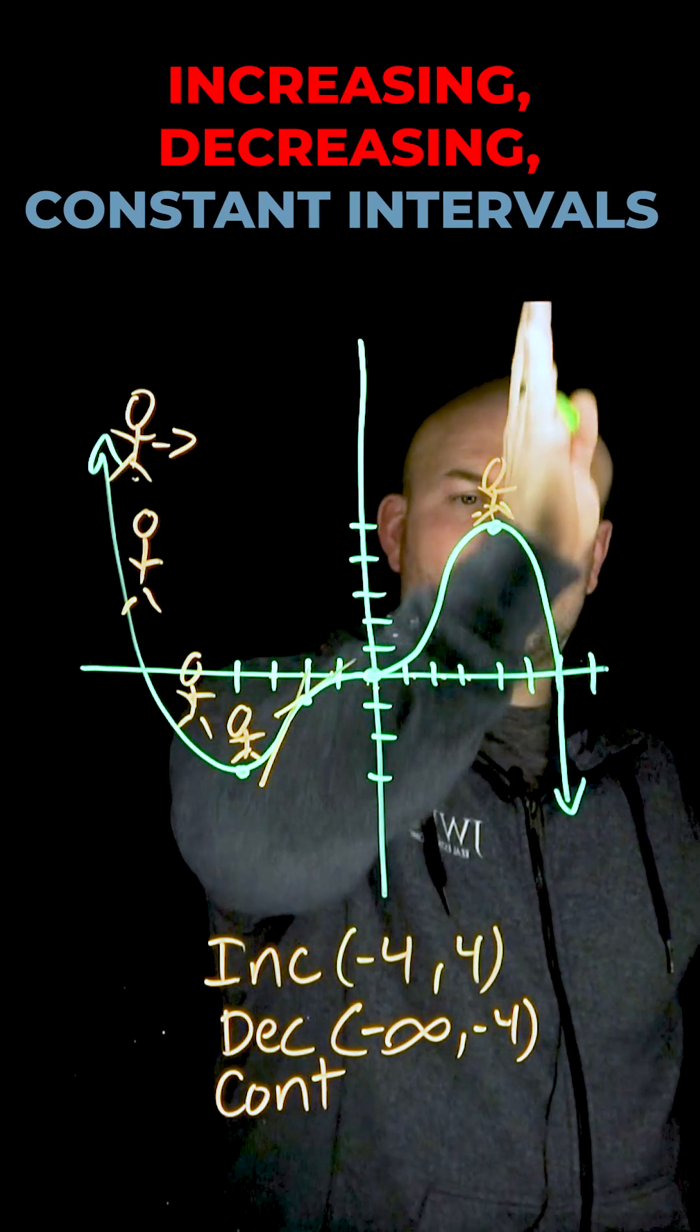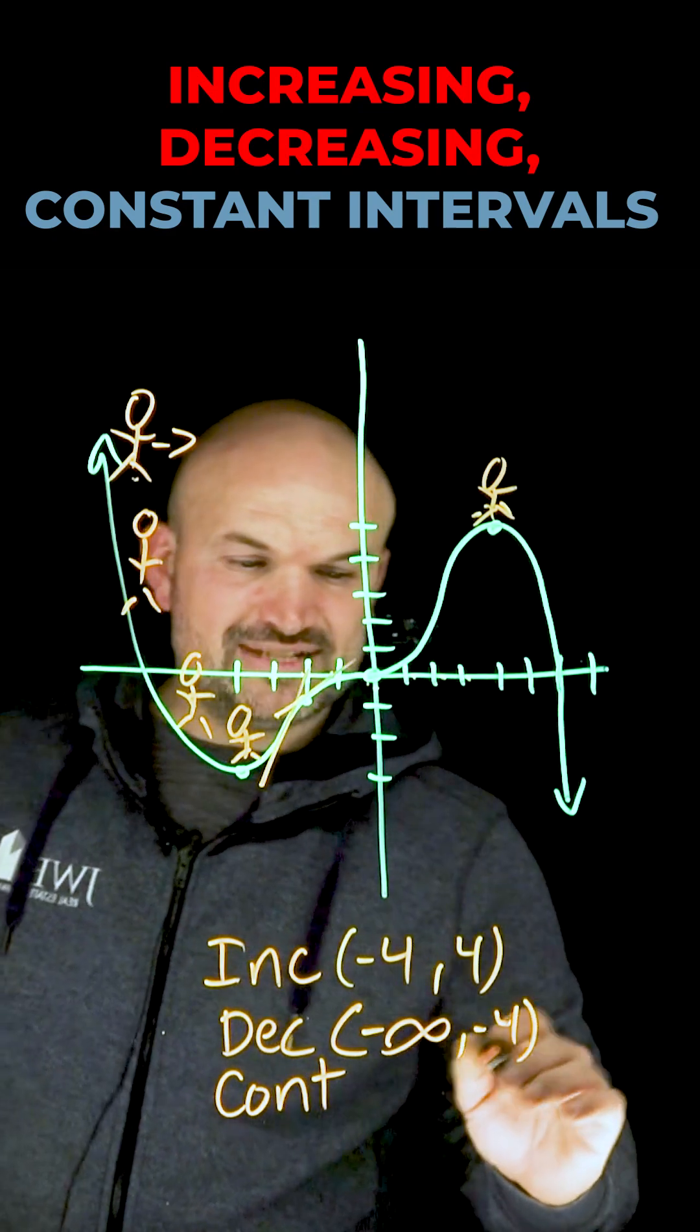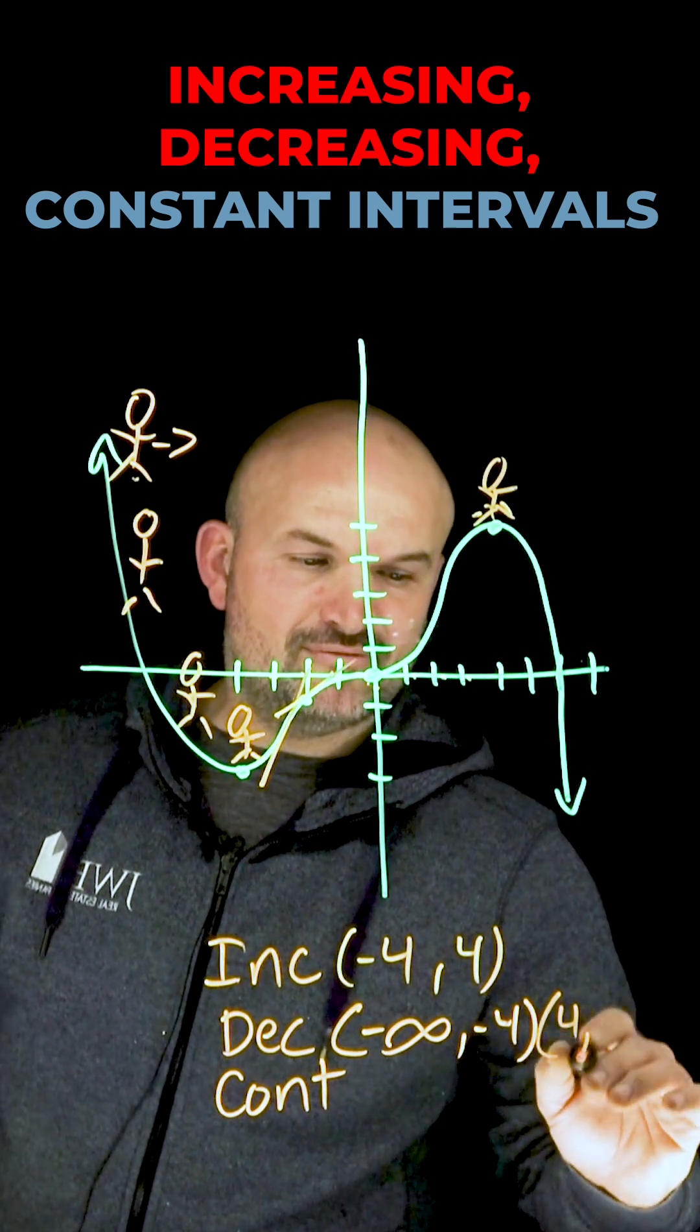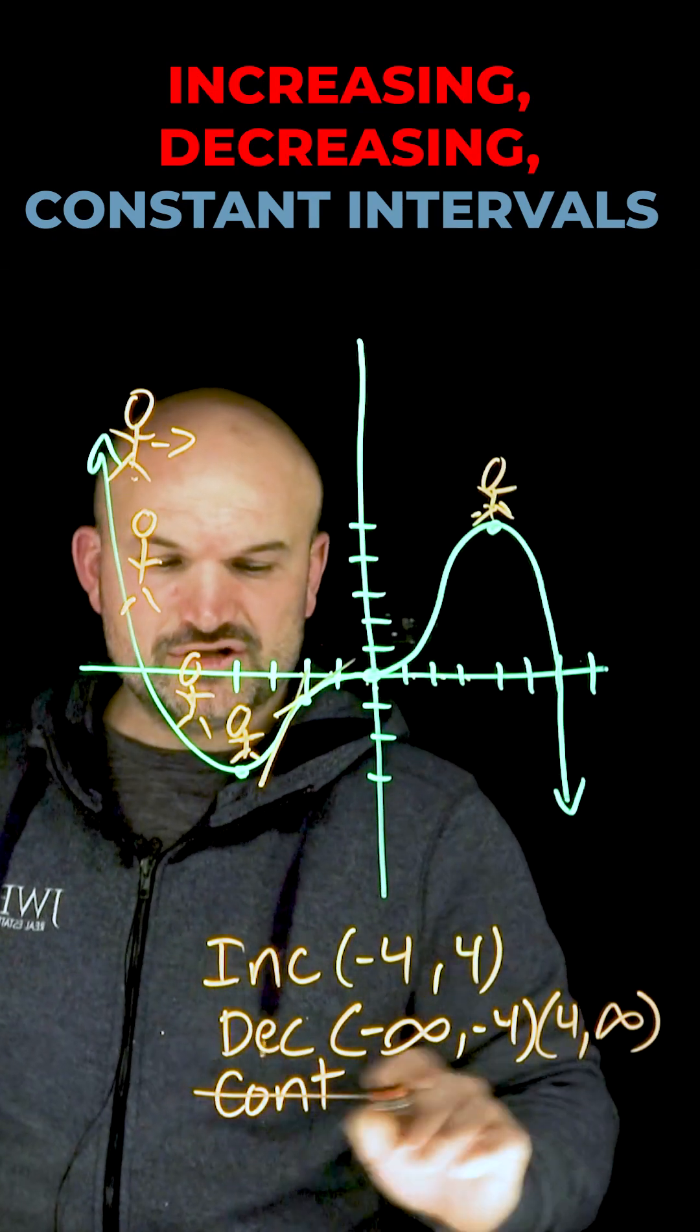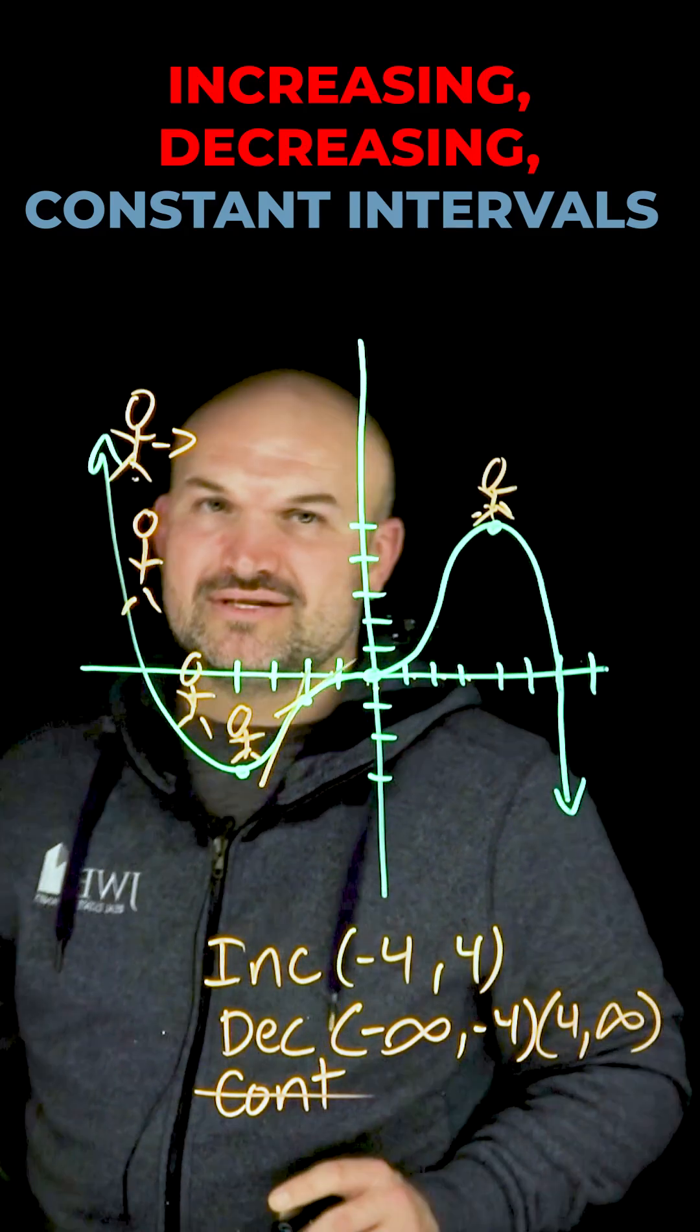As we go further right, we're going to start falling down. As we continue doing more and more to the right, we're still going to be going down. So we're going to have another decreasing interval, and that's going to be from 4 to infinity. There's no constant interval, and that's how you determine the increasing, decreasing, constant intervals of a graph.